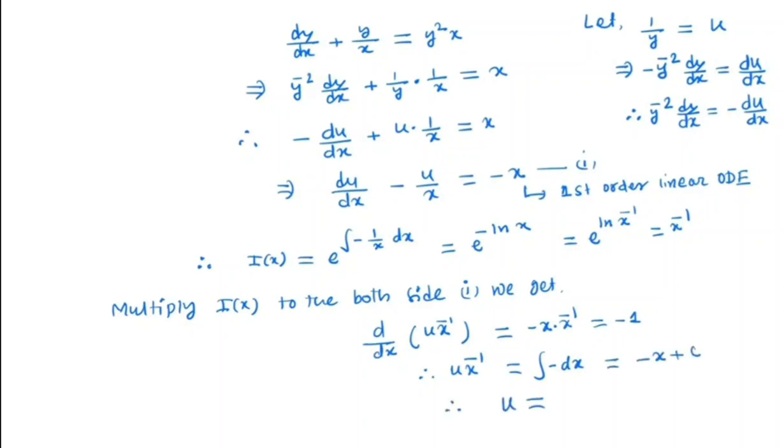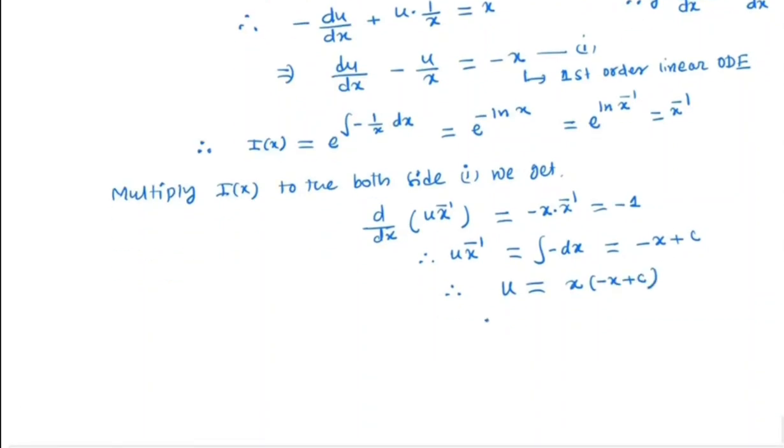So u will be x times (-x + c) and what is u? u is 1/y. So the general solution is 1/y = x(-x + c).